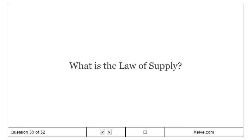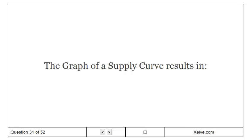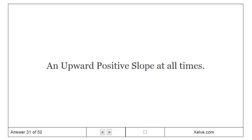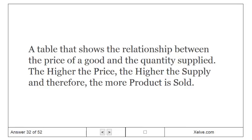What is the law of supply? When price rises, supply rises; when price falls, supply falls. The graph of a supply curve results in an upward positive slope at all times. What is a supply schedule? A table that shows the relationship between the price of a good and the quantity supplied — the higher the price, the higher the supply and therefore the more product is sold.